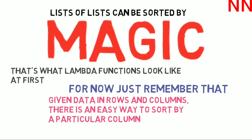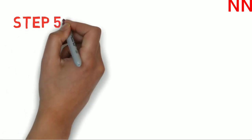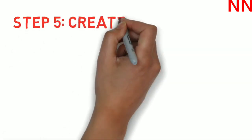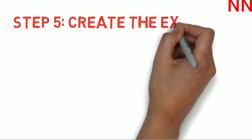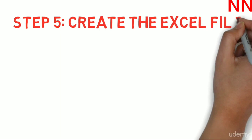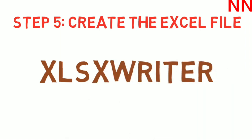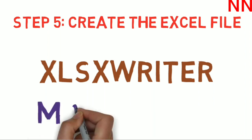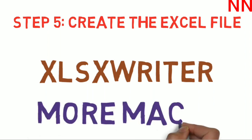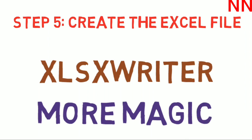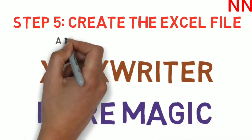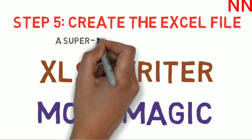At the end of step five, you've taken the data arranged in rows and columns and sorted it by the column we care about — the percentage change in price — giving you the highest-moving stocks of the day. The top five of these stocks we want to put into an Excel file that we auto-generate and then save.